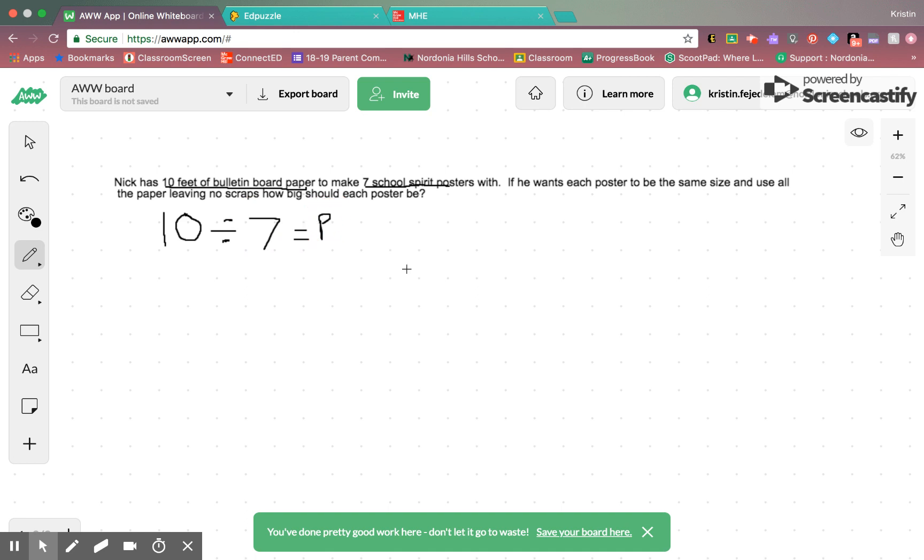So, in this case, our dividend is 10. So, remember that goes inside our big seven. And our divisor is seven. So, again, how many times can seven go into 10? Well, if we take one group of seven out, that leaves us with three. Can any more sevens come out of three? It is not possible. So, our answer would be one with a remainder of three feet of paper.